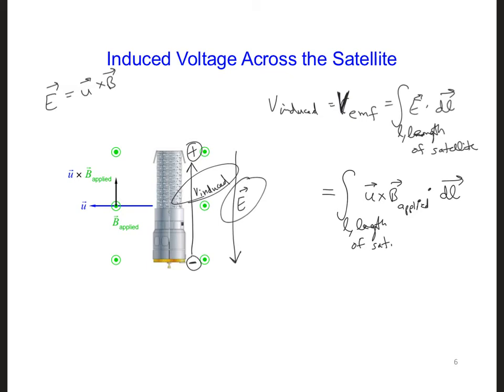So now we can plug in our numbers. We can calculate V induced is U, which was 7,800 meters per second, times the B field, which is 50 microteslas, so 10 to the minus 6 teslas, and then times the length. It's integrated over the length. The length was given as 10 meters, and so all in all we get 3.9 volts.